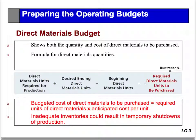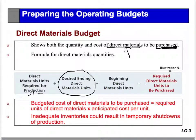Next, we look at the direct material budget. This is the budget of purchases of direct material or raw material that we need to meet the production budget. It's the same analytical thinking that we did with the production budget. We take the production requirements from the previous budget, add management's policy regarding ending inventory of direct materials, and subtract the beginning materials.